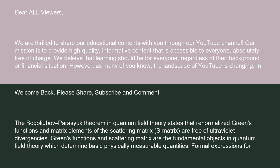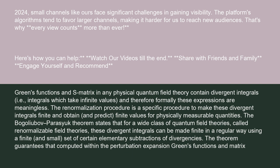Formal expressions for Green's functions and the S-matrix in any physical quantum field theory contain divergent integrals — i.e., integrals which take infinite values — and therefore formally these expressions are meaningless. The renormalization procedure is a specific procedure to make these divergent integrals finite and obtain, and predict, finite values for physically measurable quantities.